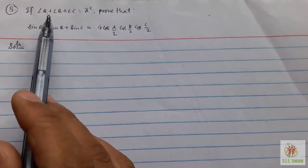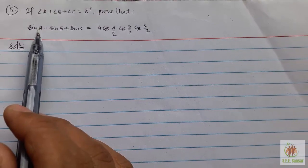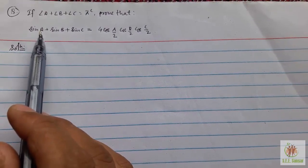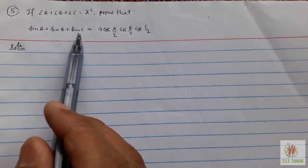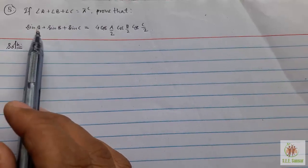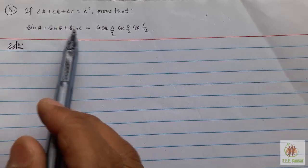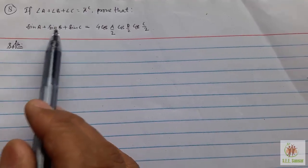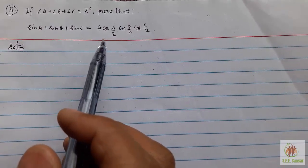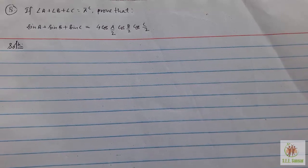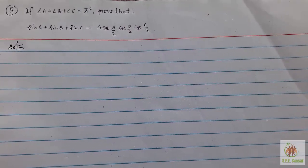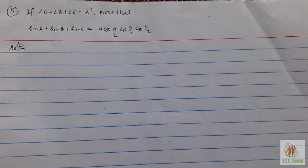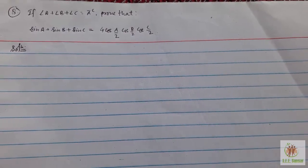And there will be submultiples of sin A. That means sin 2A may be here, sin 2B here, sin 2C also. Similarly 3A, 3B, 3C, anything. Anything it can be, similarly A/2, B/2, C/2.